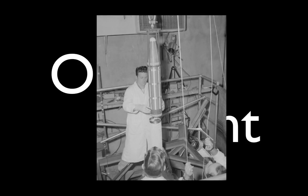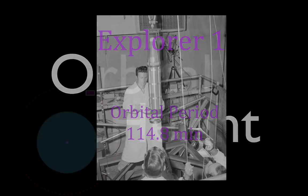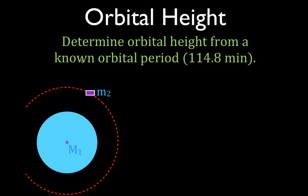We are going to be calculating the orbital height of Explorer 1 — America's answer to Sputnik 1 and Sputnik 2, America's first artificial satellite to orbit the Earth. It had an orbital period of 114.8 minutes, and we are going to calculate the height above the Earth's surface based on that known orbital period. We're going to assume the orbit of Explorer 1 was a circular orbit, even though it was actually somewhat eccentric.